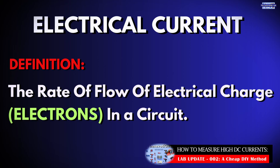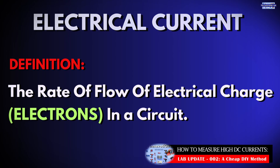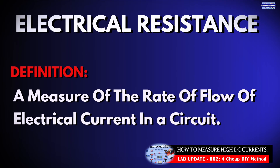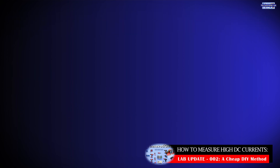Electrical current, on the other hand, is defined as the rate of flow of electrical charge — in this case electrons — in an electrical circuit. And finally, resistance is defined as the measure of opposition to the flow of electrical current in an electrical circuit.